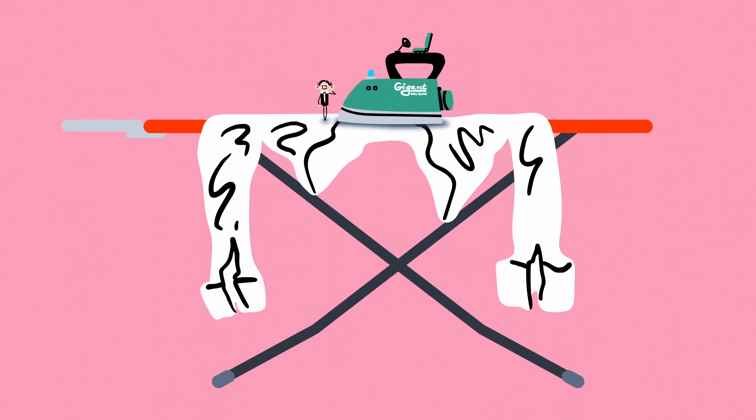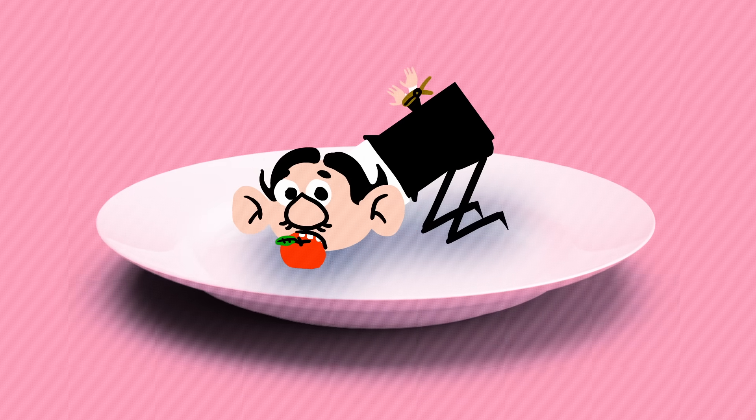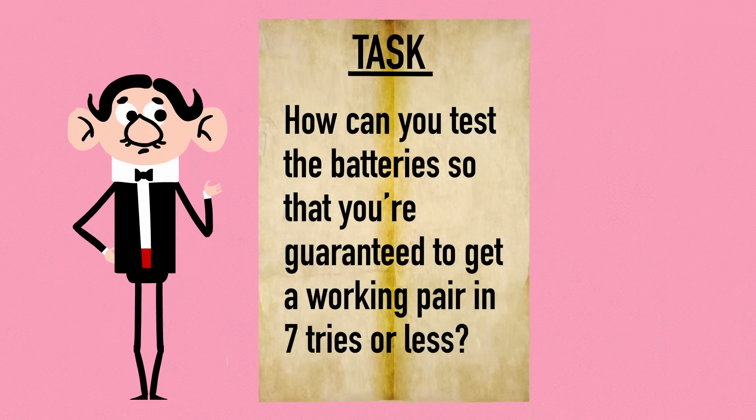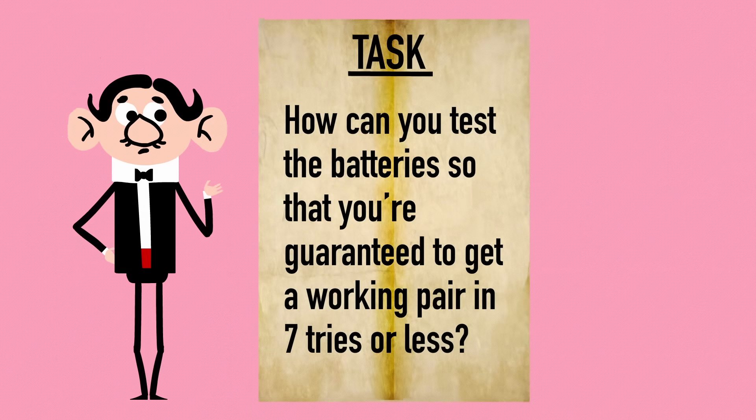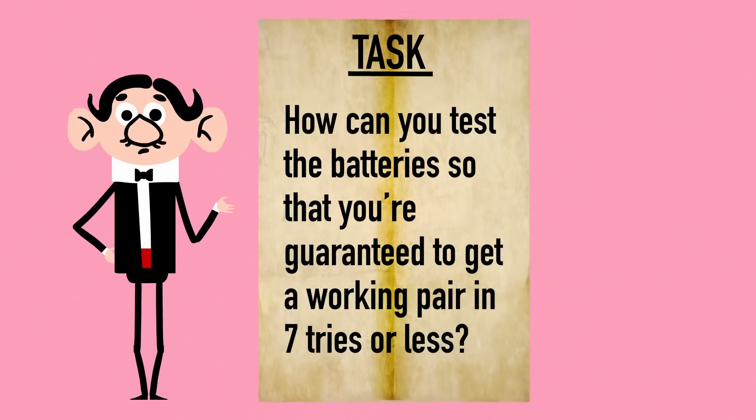You need to get the iron working and press the giant shirt fast, or you'll end up being the main course tonight. How can you test the batteries so that you're guaranteed to get a working pair in seven tries or less?